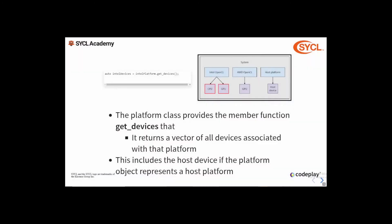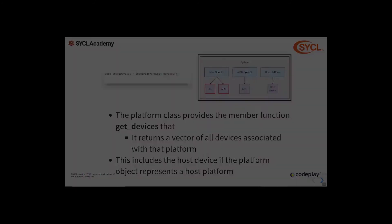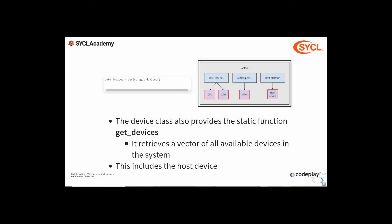The platform class also provides a member function called get_devices, which returns a vector of all the devices associated with a specific platform, including the host device. So in this example where the Intel OpenCL platform has a CPU device and a GPU device, calling get_devices on that platform returns both. Alternatively, the device class also provides a static member function called get_devices, which returns a vector of all devices available in the system across all platforms — again including the host device.